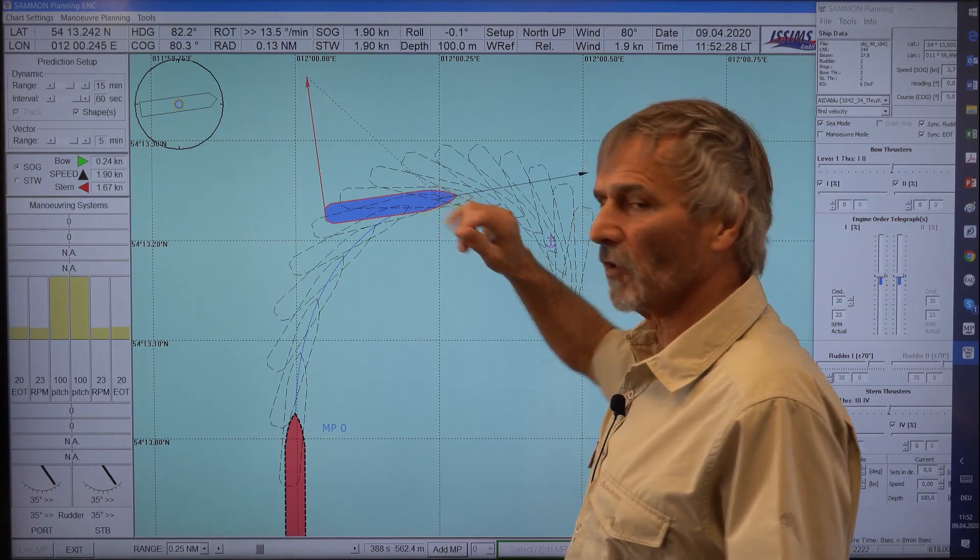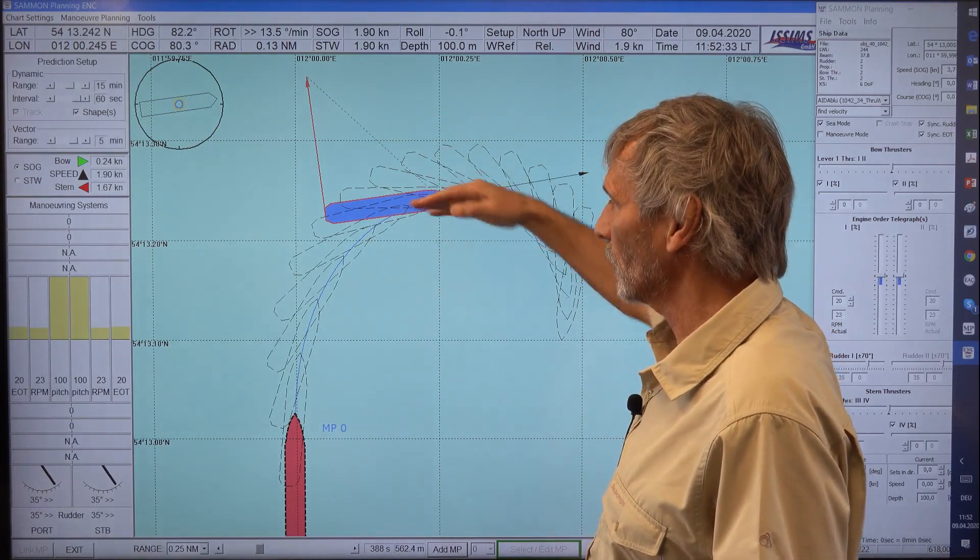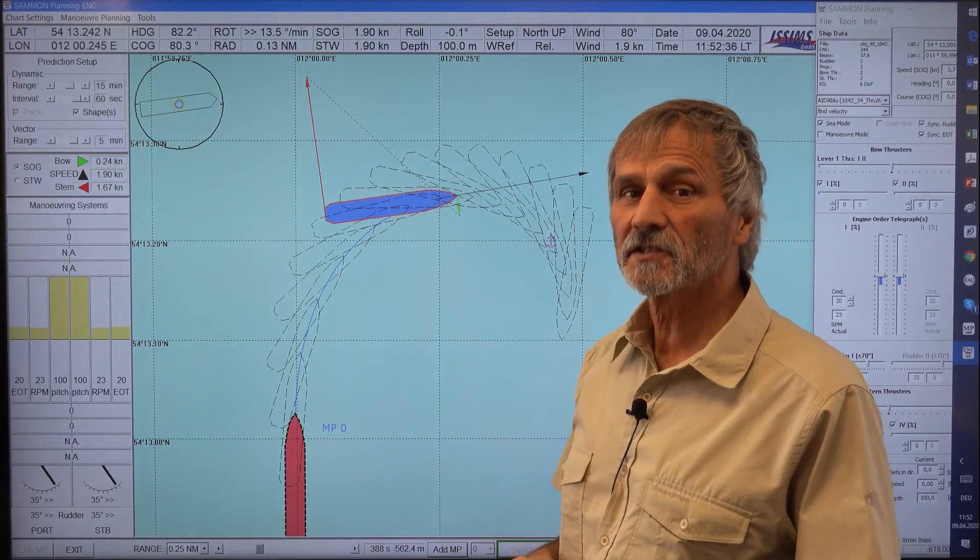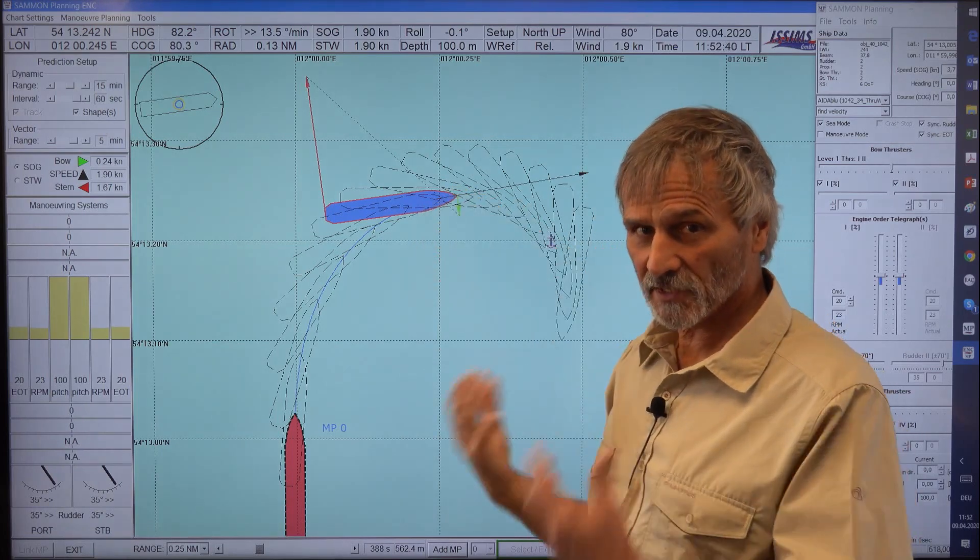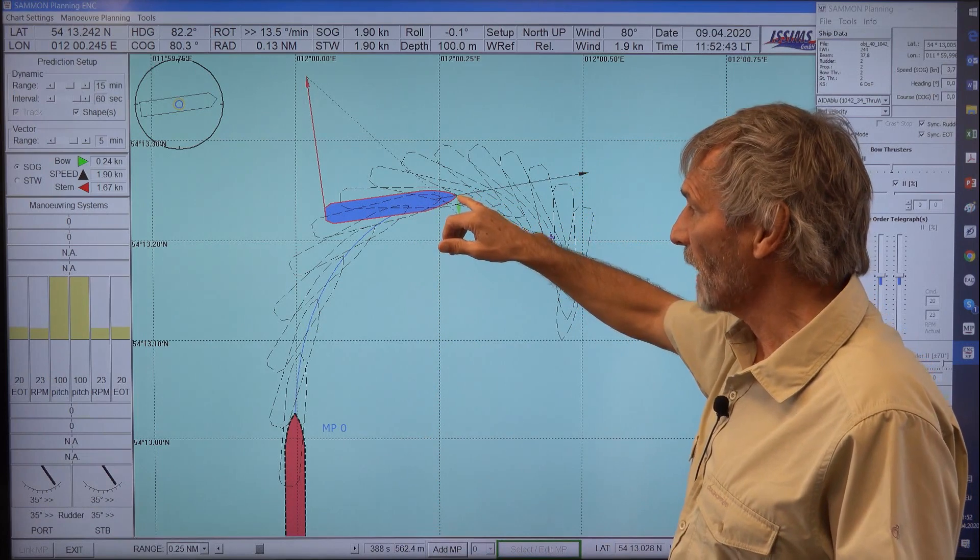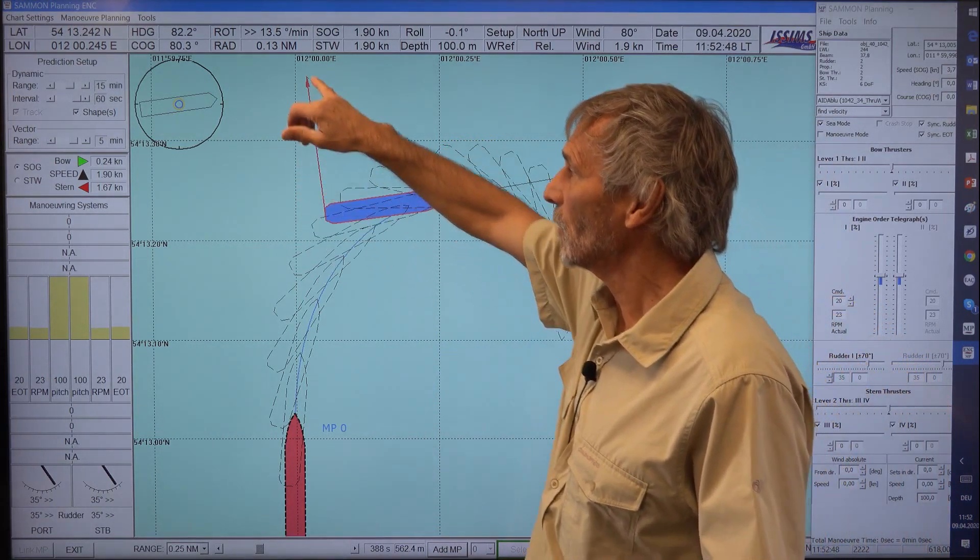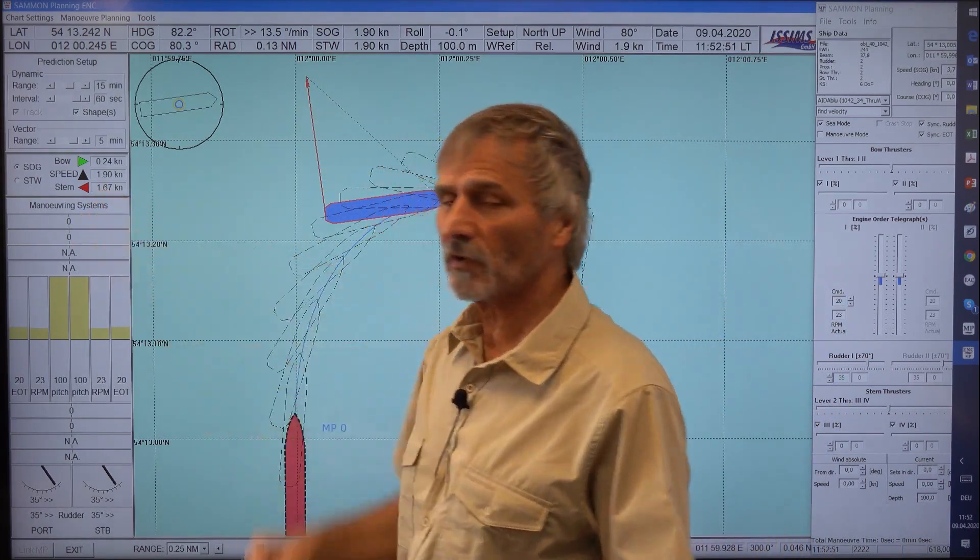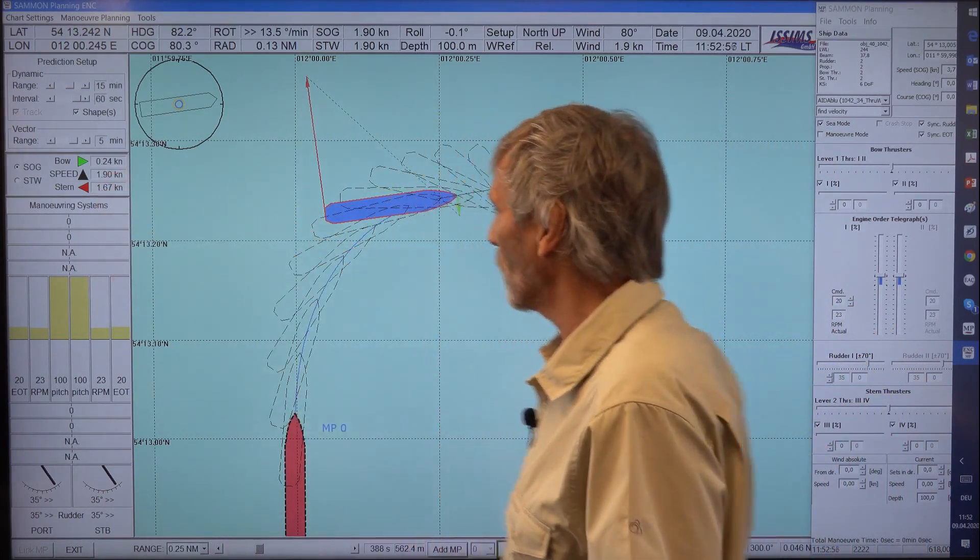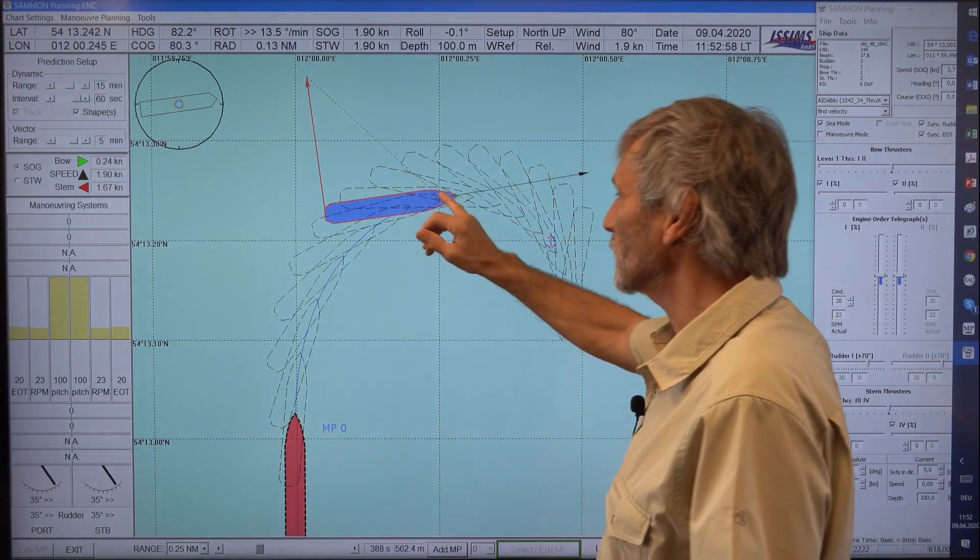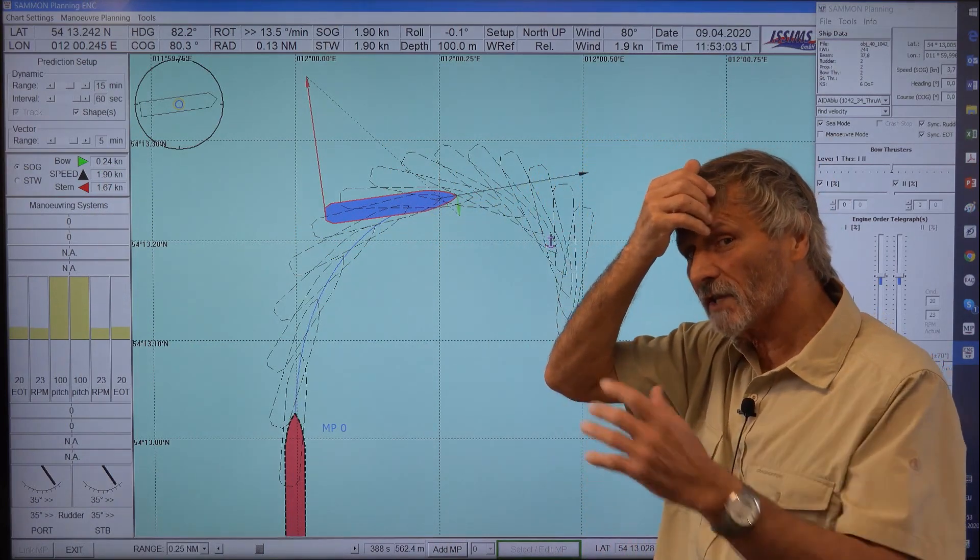The pivot point means this is the point where the transfer speed of this ship shape is zero. So the ship turns around this pivot point at the moment. And at the bow, the bow is moving in this direction and the stern is going to the outside of the turning circle with 1.67 knots. The bow is only small, 0.24. And here, this position, this has only a forward speed. The pivot point has only a forward speed but no transfer speed.